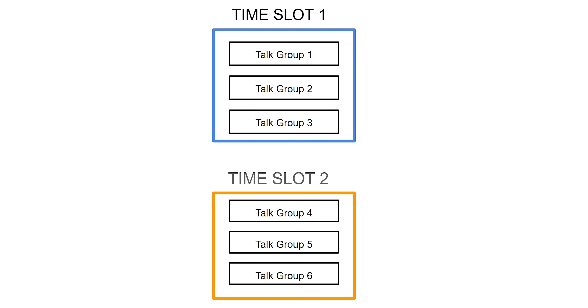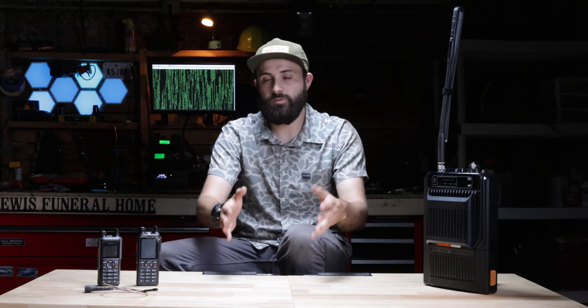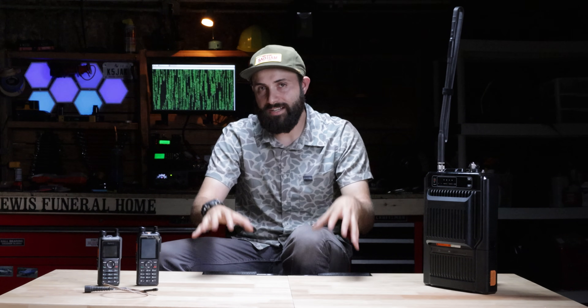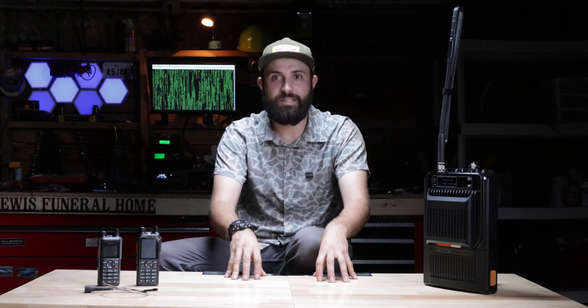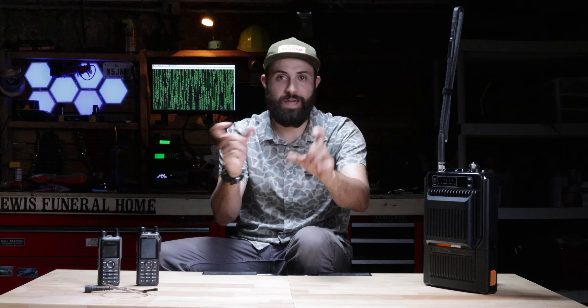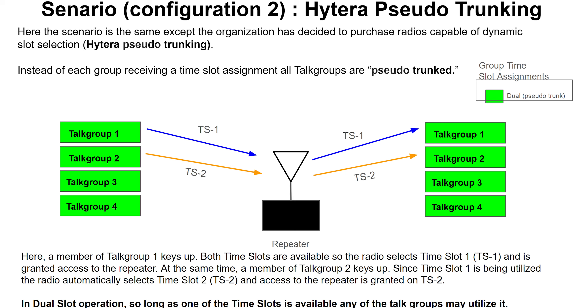DMR has a strategic and technological advantage by offering two different time slots for one given frequency. This essentially creates a magic fourth lane in our three-lane highway analogy, allowing you to fit another person in that space. Typically, which time slot your radio is working on is selected during the programming of the radio. This is where the magic of Hytera's very specific pseudo-trunking technology comes into play — it can automatically choose the best time slot to get the best path to the other radio.